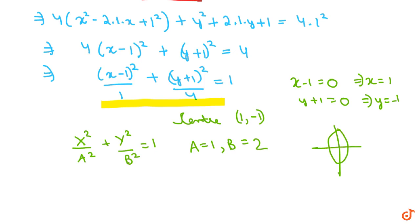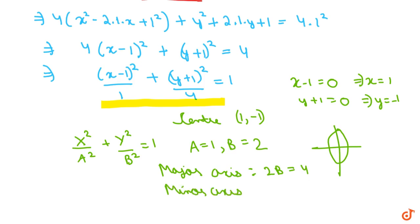Now we find the lengths of the axes. The length of the major axis is 2b = 4. The length of the minor axis is 2a = 2.